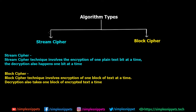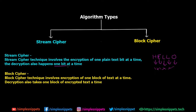As the name suggests, stream ciphers involve the encryption of one plain text bit at a time. So let's say the plain text is 'hello' — the stream cipher will encrypt H separately, E separately, L separately, L separately, and O separately to some random cipher text, depending on what algorithm we're using. This happens one bit or one byte at a time depending upon the architecture of the system.